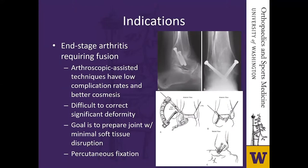Another indication is end-stage arthritis requiring fusion. The gold standard for ankle arthrodesis is still open tibiotalar arthrodesis; however, arthroscopic-assisted techniques are becoming more prevalent. These techniques have a relatively low complication rate and better cosmesis, but it is very difficult to correct significant deformity arthroscopically. They are reserved for relatively small deformity correction, with the goal of preparing the joint with minimal soft tissue disruption followed by percutaneous fixation.